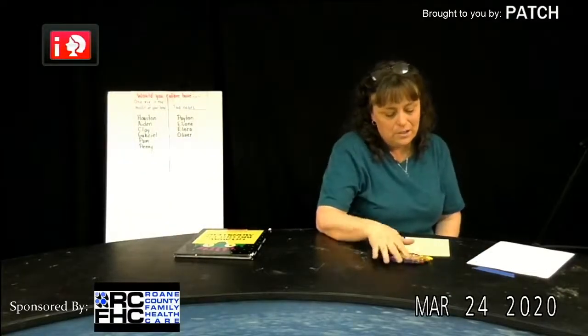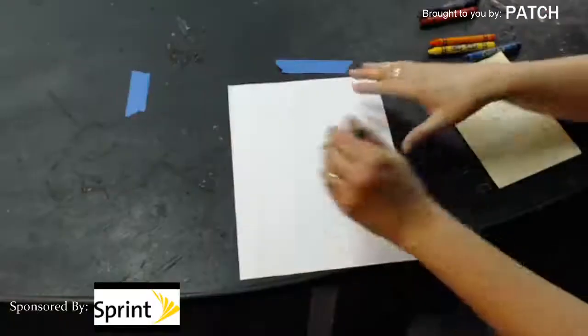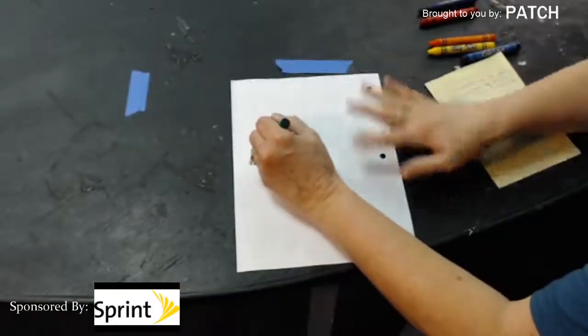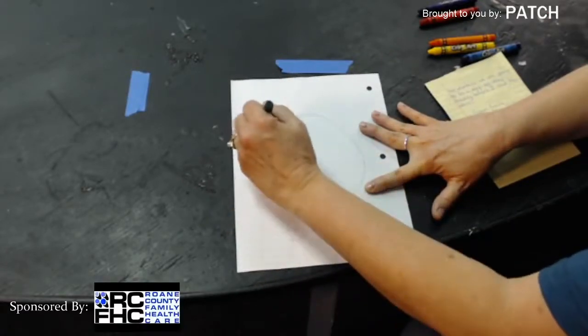The first thing we have to do is I want you to draw a green circle in the middle of your paper. So we're just going to draw a green circle in the middle of our paper. Oh, look at that circle.